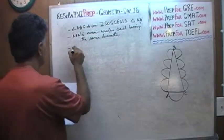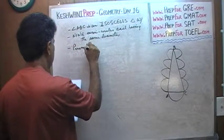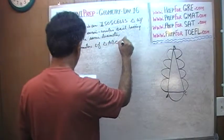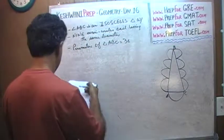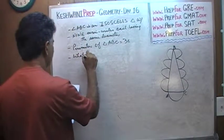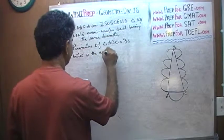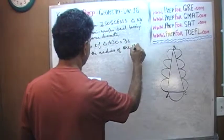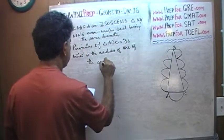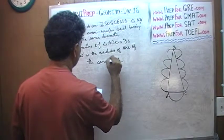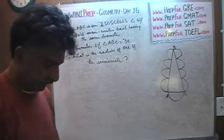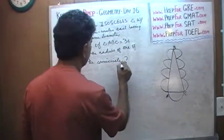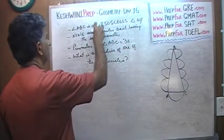And we are told that the perimeter of triangle ABC equals 36. The question simply is, what is the radius of one of the semicircles? I just realized the semicircles should not have been hyphenated. One of the semicircles. This should not have been hyphenated.